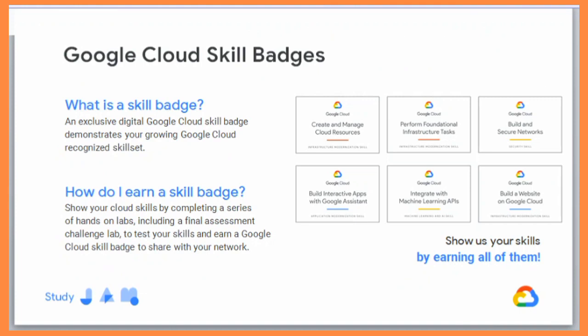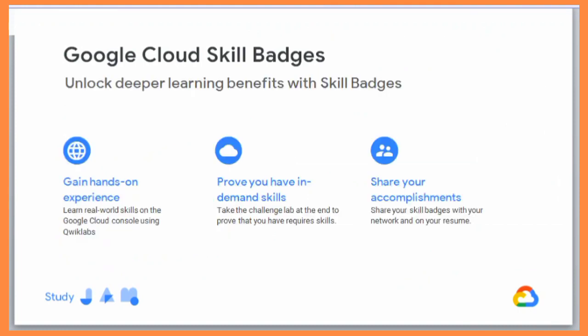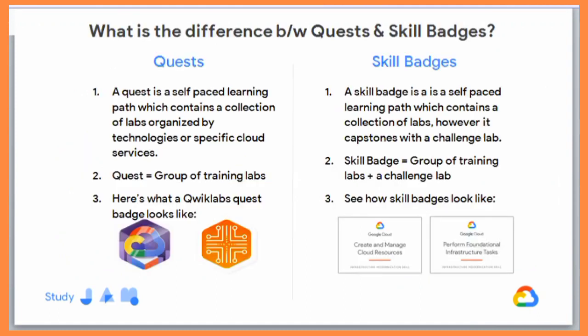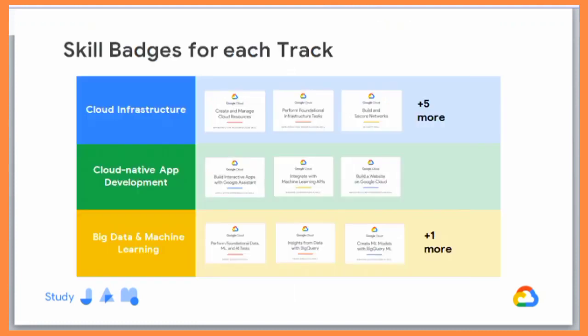Google Cloud Skill Badges are exclusive digital credentials that demonstrate your growing, recognized cloud skill sets. You earn skill badges by completing different types of labs within each badge. You can showcase these skill badges on your social media profiles, unlock deeper learning benefits, and prove you have in-demand skills. Share your accomplishments on LinkedIn and other platforms. Once you complete all the quests and skill badges, your profile will be full of badges issued by Google Cloud, which you can add to your resume.